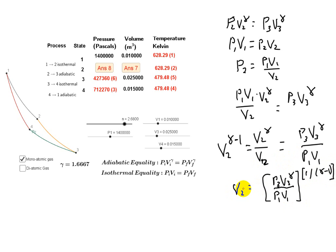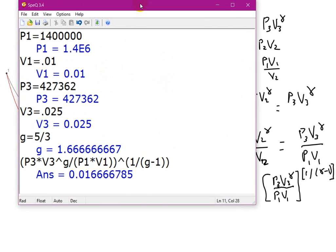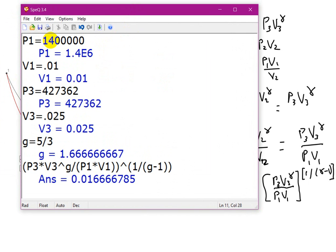Now all we have to do is plug stuff in and calculate it. So here we have a calculator. I've defined P1 as 1.4 megapascals, V1 as 0.01 cubic meters, P3 in pascals, V3 in cubic meters, gamma which I've called G is 5 thirds. So we have P3 times V3 to the power of gamma divided by P1 times V1, and take that whole quantity and raise it to 1 over gamma minus 1. And our answer is going to be 0.0166, and that's in cubic meters.